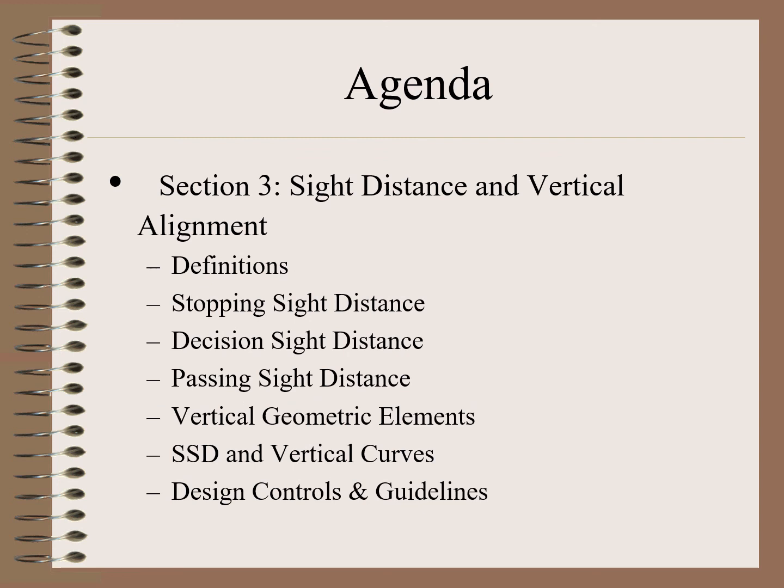Section 3: Sight Distance and Vertical Alignment. In this section, we will cover definitions, stopping sight distance, decision sight distance, passing sight distance, vertical geometric elements, stopping sight distance and vertical curves and the relationship, and design controls and guidelines.